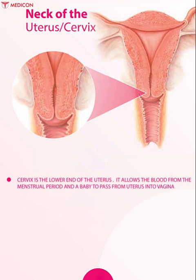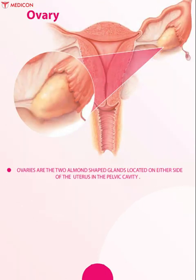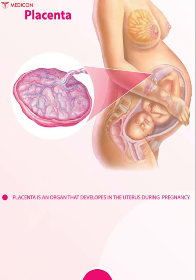Ovaries are two almond-shaped glands located on either side of the uterus in the pelvic cavity. They release a mature ovum each month in a process known as ovulation, and also produce and secrete the sex hormones estrogen and progesterone.